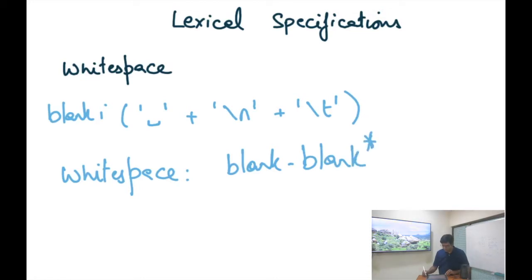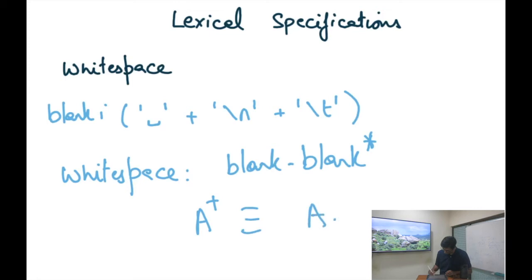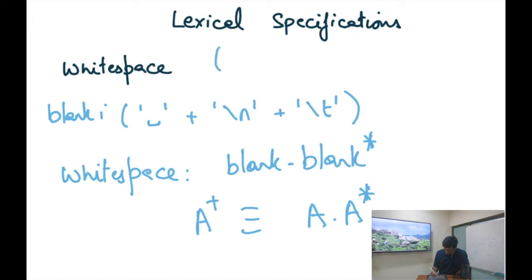To fix this, I'll define 'blank' as those three characters (space, newline, tab), and then define 'whitespace' as one or more blanks — blank followed by blank star. This introduces the notation A plus, which represents one or more occurrences of A. Just like Kleene star (A star) represents zero or more occurrences, A plus represents one or more. A plus is just a shorthand for A followed by A star.